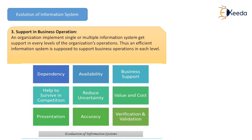3. Support in Business Operations: An organization implements a single or multiple information systems to get support at every level of organization operations. Thus, an efficient information system is supposed to support the business operations at each level. These different criteria are each dependent on each other.